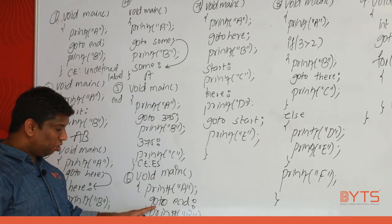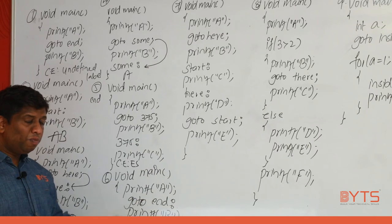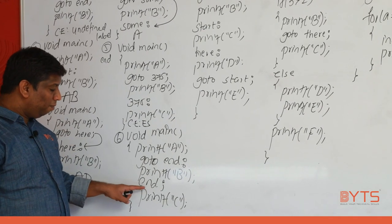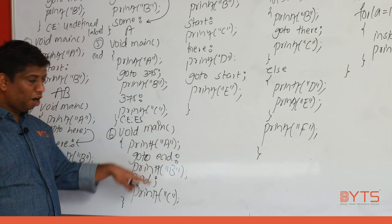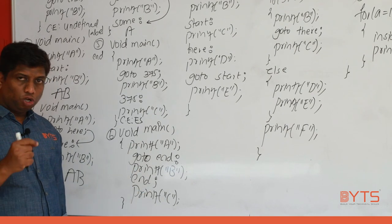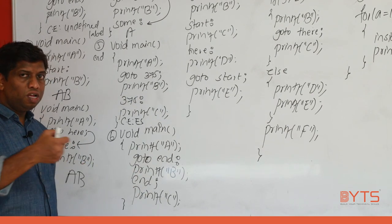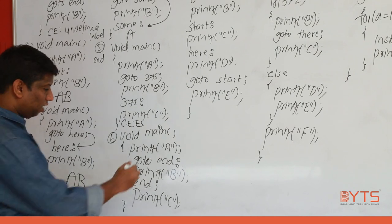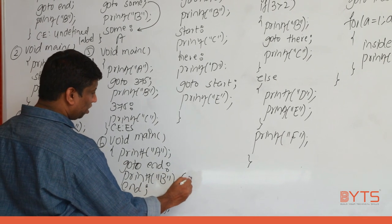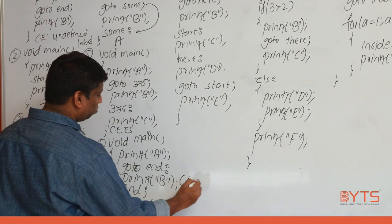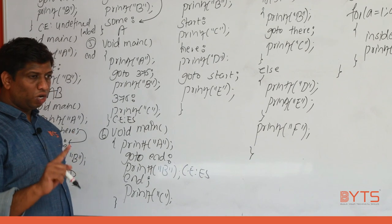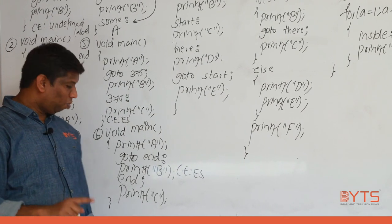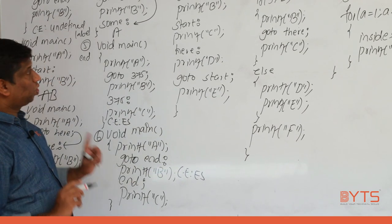Another important rule: goto should end with a semicolon, and a label should end with a colon. If these are swapped, you get a compilation error: expression syntax.